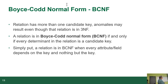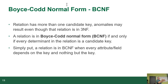Boyce-Codd normal form applies when a relation has more than one candidate key, and anomalies sometimes occur even when in third normal form. A relation is said to be in Boyce-Codd if and only if every determinant is a candidate key. Simply put, Boyce-Codd means every attribute or field depends on the key and nothing but the key. Boyce-Codd is often referred to as normal form three-and-a-half, because it's really third normal form with an edge case taken out. So you have third normal form, fourth normal form, and they put one in the middle and called it Boyce-Codd.